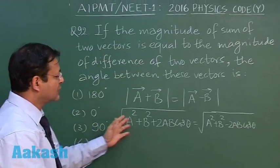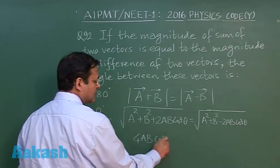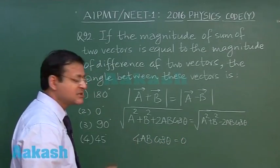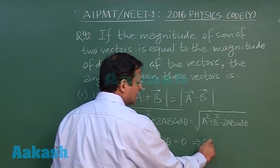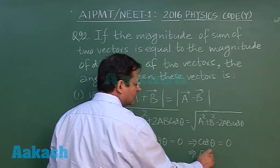You just square, cancel out the things, and ultimately you will get 4ab cos θ = 0. You can clearly see a cannot be 0, b cannot be 0, so cos θ is 0. This implies that θ = 90 degrees.